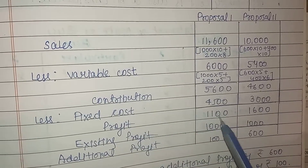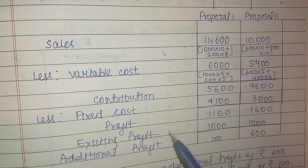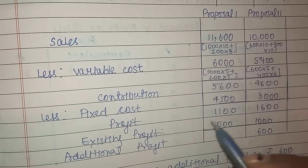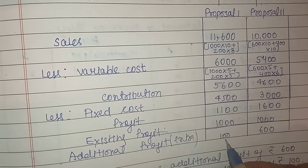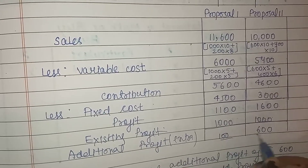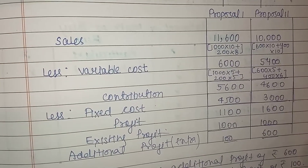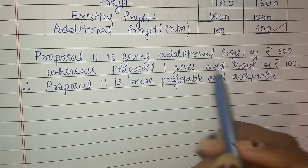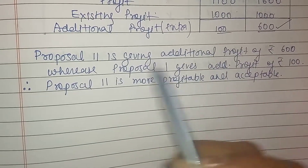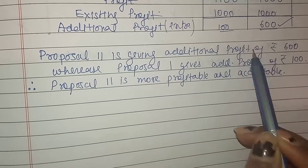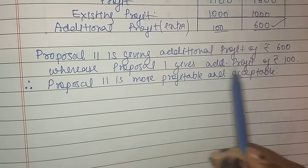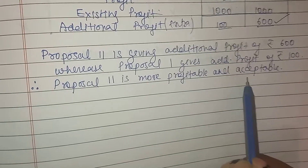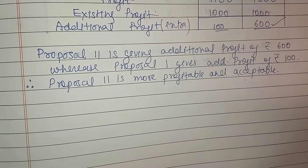After deducting fixed costs: Proposal 1 profit = ₹1,100, Proposal 2 profit = ₹1,600. Existing profit was ₹1,000, so additional profit from Proposal 1 is ₹100 and from Proposal 2 is ₹600. Obviously, Proposal 2 is more profitable and should be accepted. So Proposal 2 is more profitable and acceptable. We will continue in the next video. Thank you.